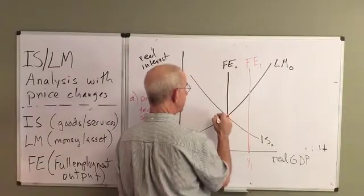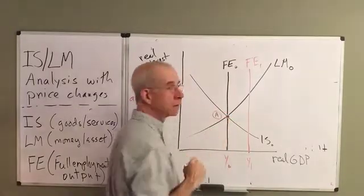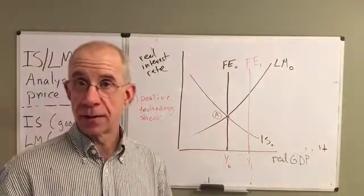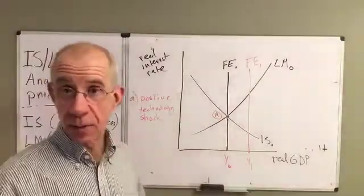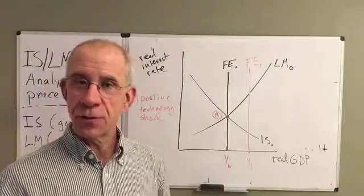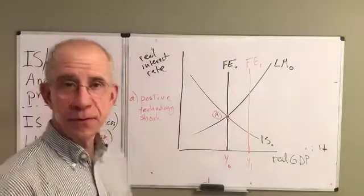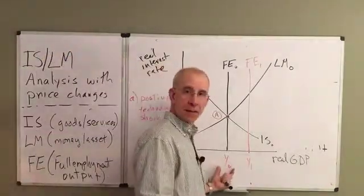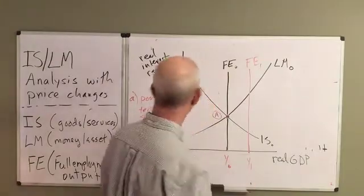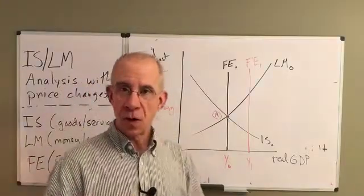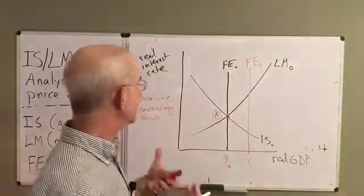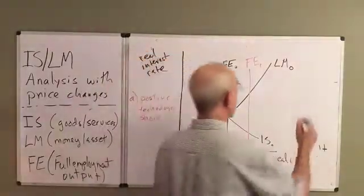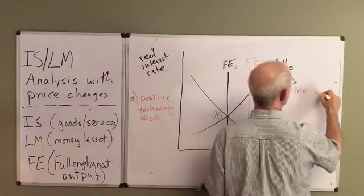Let's imagine that we continue to focus on point A, which is where the goods market and money market are in equilibrium. Well, this is not a general equilibrium — all three of these curves don't meet. So what changes? This positive technology shock is going to result in output being below the maximum possible output, which will tend to lower prices. Prices of goods will fall as technology has improved.